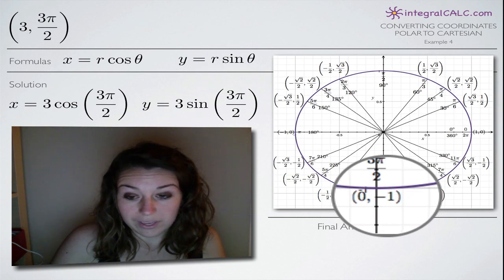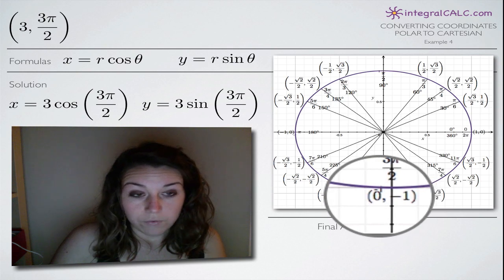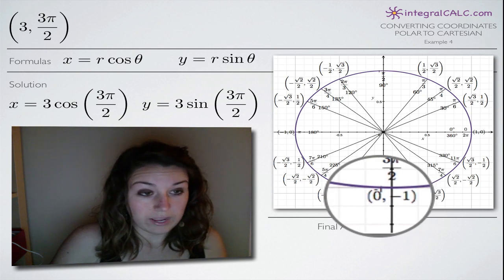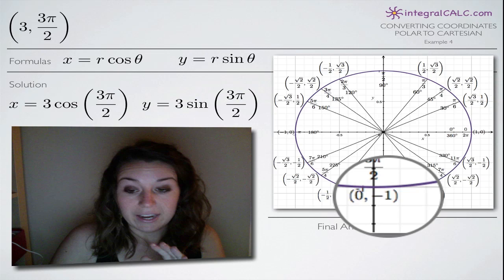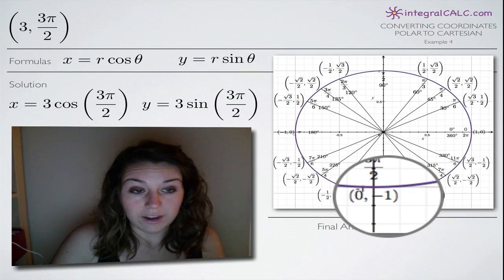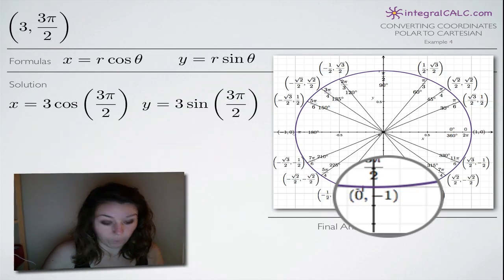So we're going to end up plugging in 0 for cosine of 3π/2 in our x equation and negative 1 for sine of 3π/2 in our y equation.